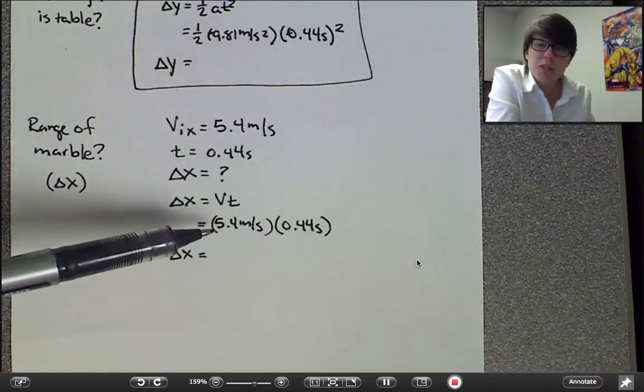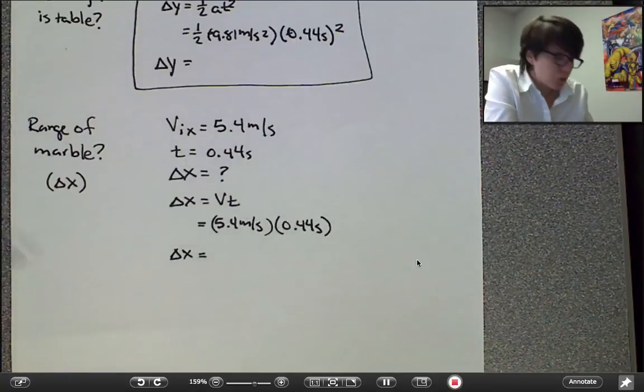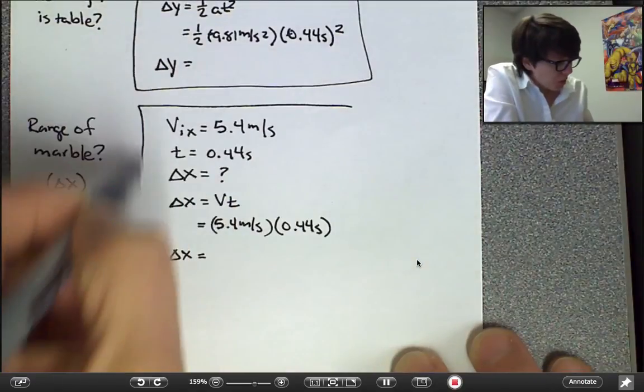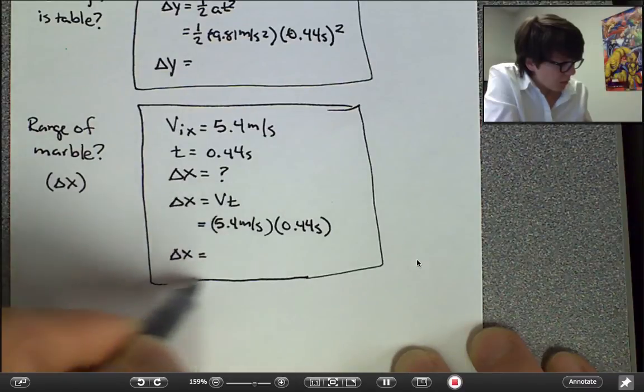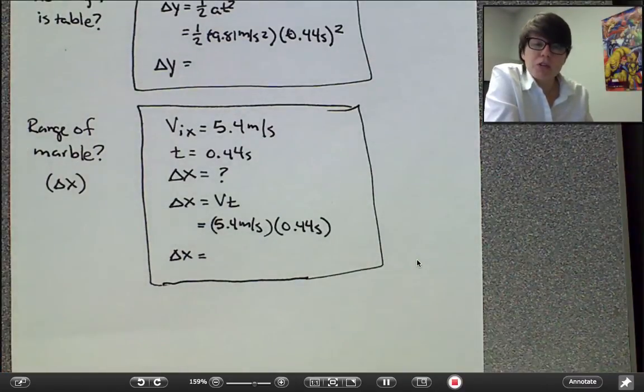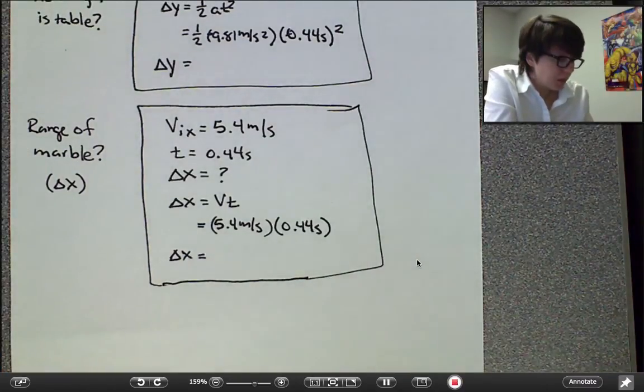Therefore, the change in position of the marble is the velocity it travels at times the time it travels for. So, I'll let you crunch the numbers to answer that numerically for what is the range of the marble.